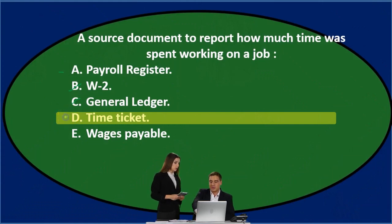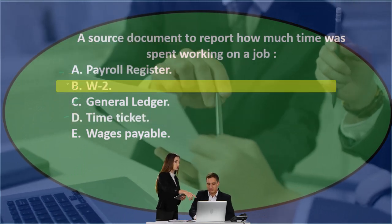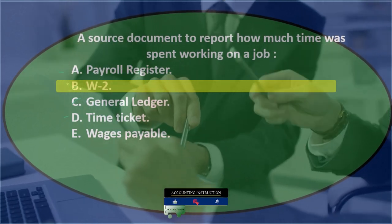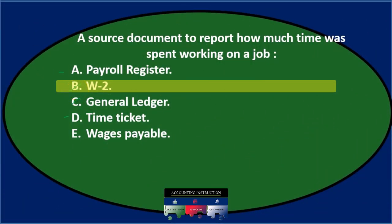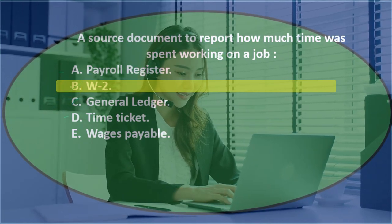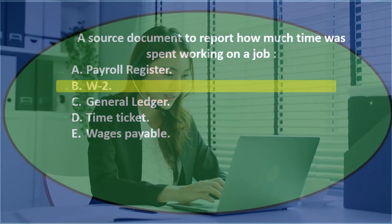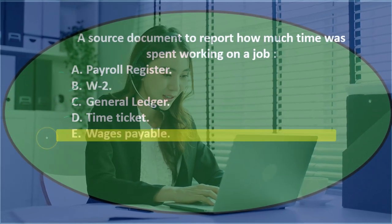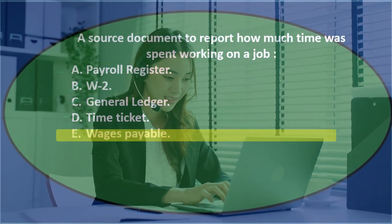The time ticket sounds like a source document, so I'll keep that for now. B isn't really a source document — it's a reporting document. A source document is the source of us entering data into the system, whereas a W-2 is the result of data being processed and reported. It could be a source document for the employee's tax return, but from the company's perspective it's not. E) wages payable — that's part of a journal entry, not a source document.